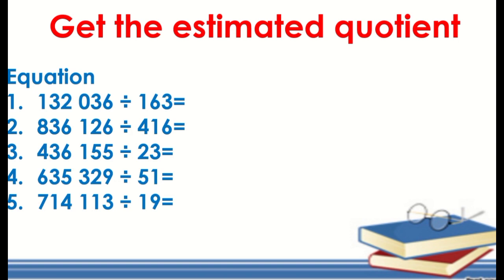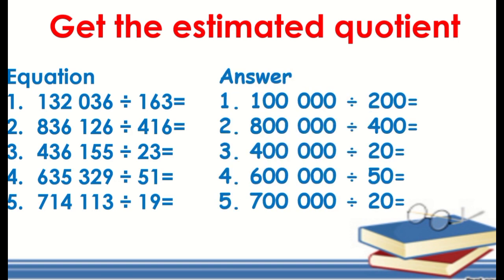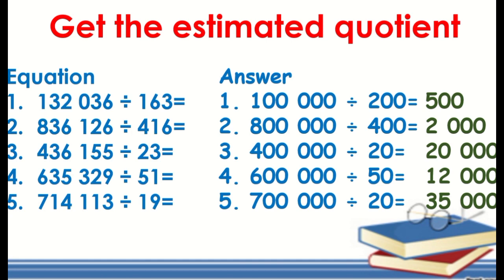Okay, let's check. First, estimate the dividend and divisor for each item. Number 1: 100,000 divided by 200. Number 2: 800,000 divided by 400. Number 3: 400,000 divided by 20. Number 4: 600,000 divided by 50. Number 5: 700,000 divided by 20. The estimated quotients are: number 1 — 500; number 2 — 2,000; number 3 — 20,000; number 4 — 12,000; number 5 — 35,000. I hope you got all five items correct.